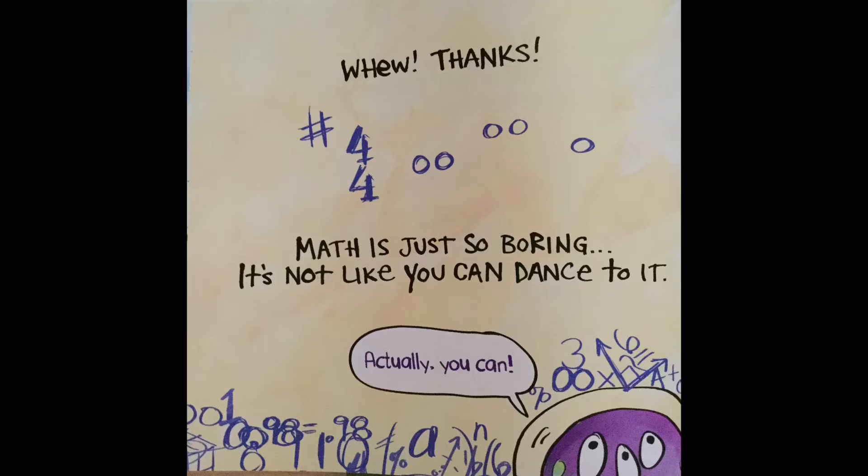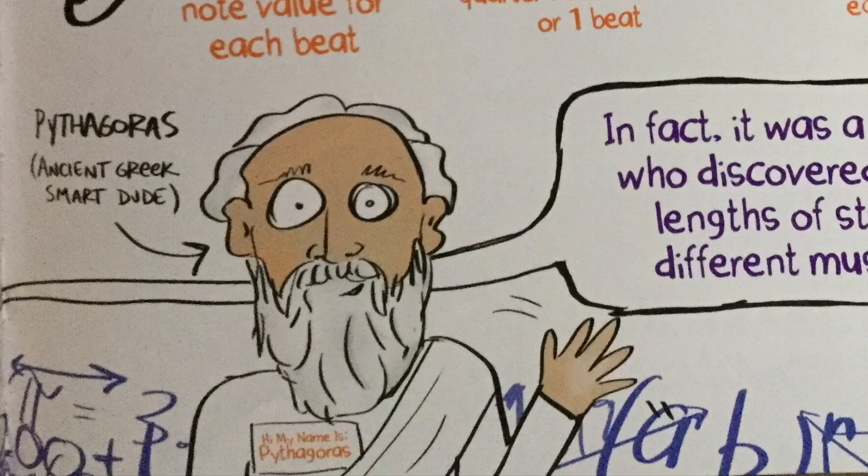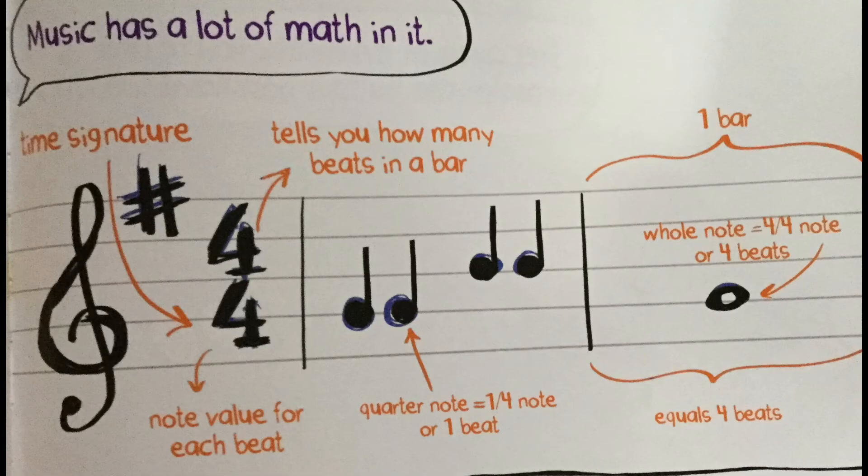Actually, you can. Music has a lot of math in it. In fact, it was a mathematician who discovered that different lengths of string produce different musical sounds. Hi, my name is Pythagoras. Pythagoras is an ancient Greek smart dude. If you look up here at the music notes, you can see math. For instance, we have our time signature. 4 over 4. The top number tells you how many beats in a bar. The bottom number tells you the note value for each beat.